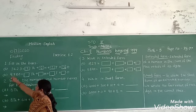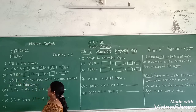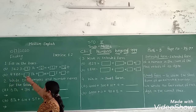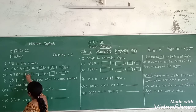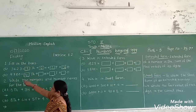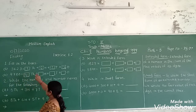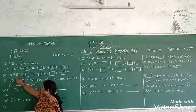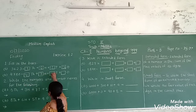Next: four thousand, seven hundred, eighty. Four is in the thousands place, so we write four in the thousands box. Seven is in the hundreds place, so we write seven in the hundreds box. Eight is in the tens place, so we write eight in the tens box.